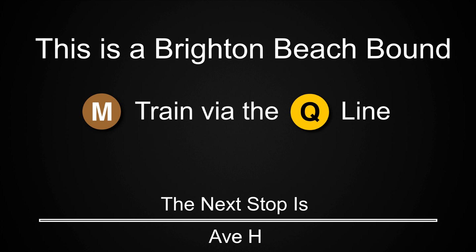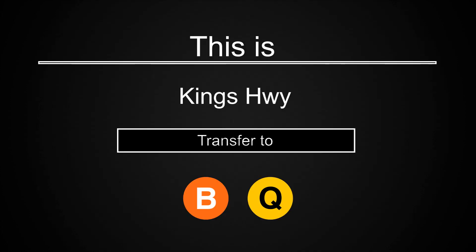This is a Brighton Beach-bound M train via the Q line. The next stop is Avenue H. Stand clear of the closing doors, please. This is a Brighton Beach-bound M train via the Q line. The next stop is Kings Highway. This is Kings Highway. Transfer is available to the B and Q trains.